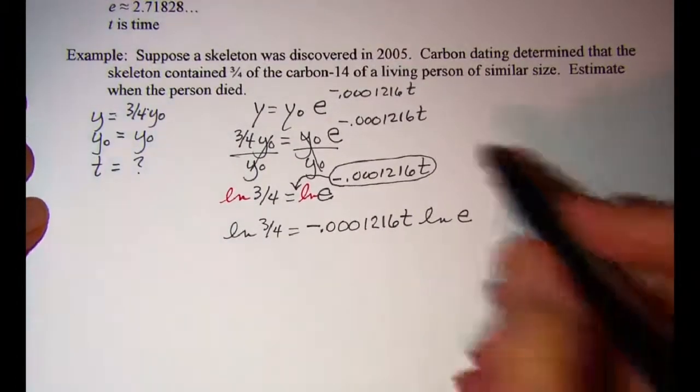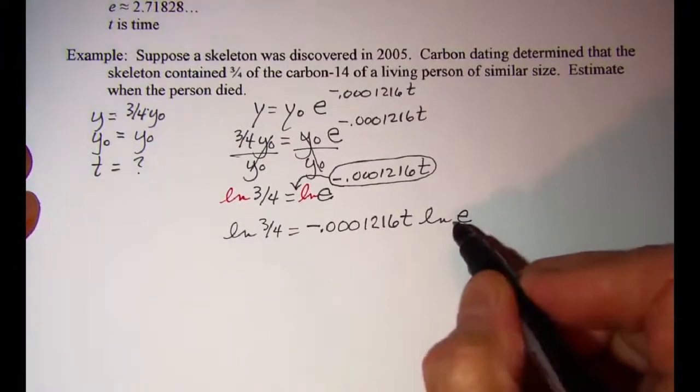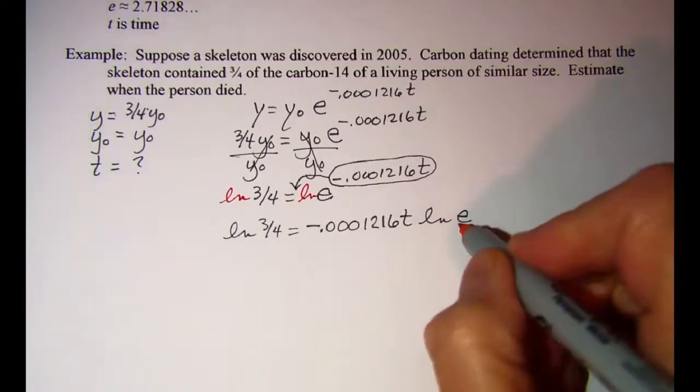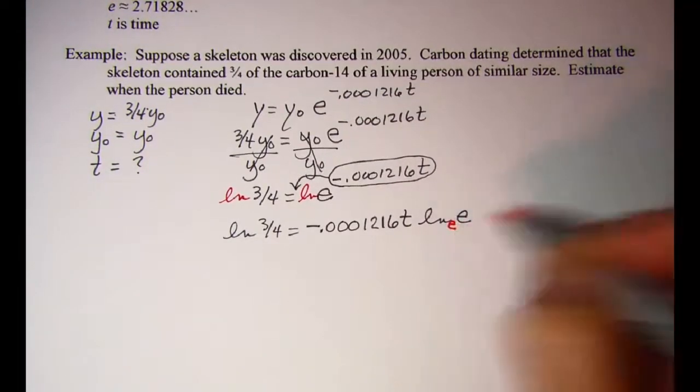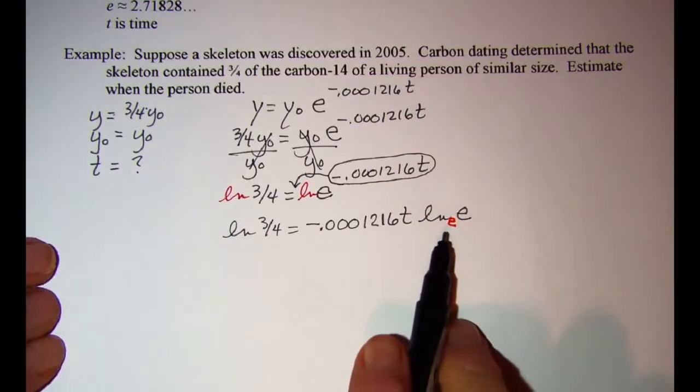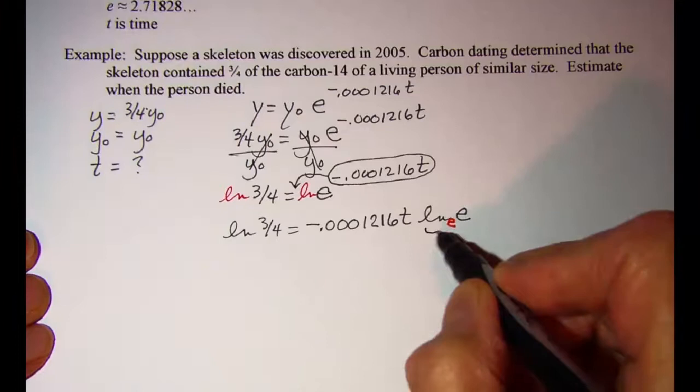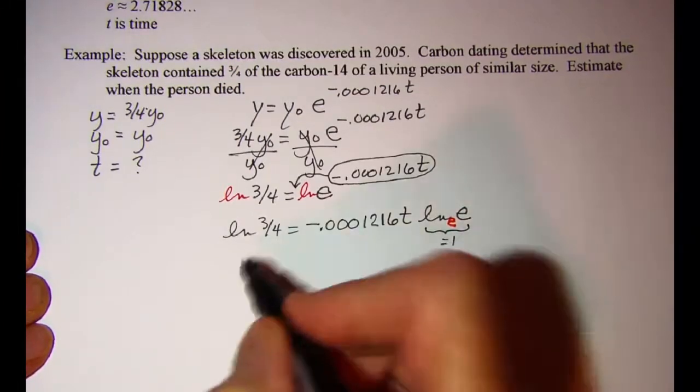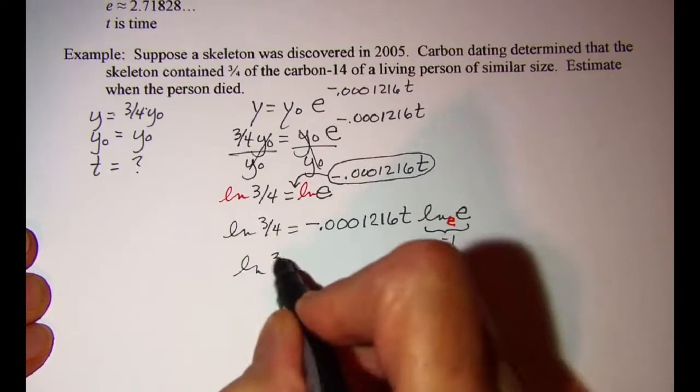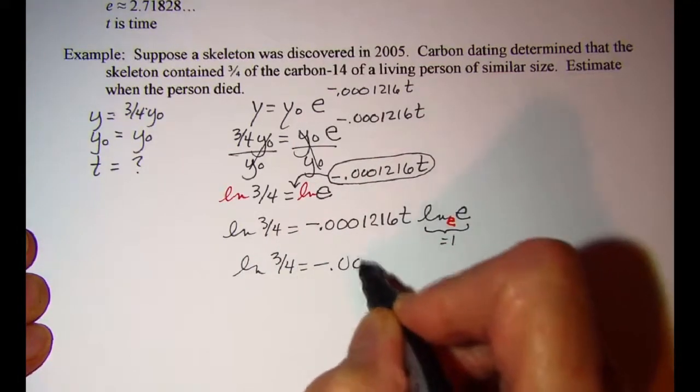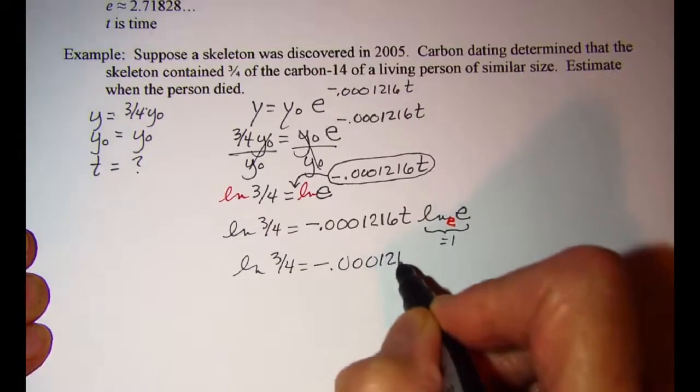Now we know from the property of logarithms that when the base of the logarithm and the argument are the same number, and we know that the base of the logarithm is e, that this factor is equal to one. So I now have ln three-fourths is equal to negative 0.0001216t.